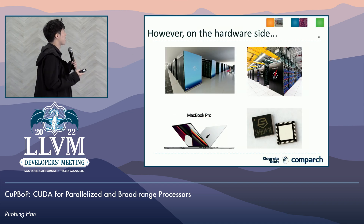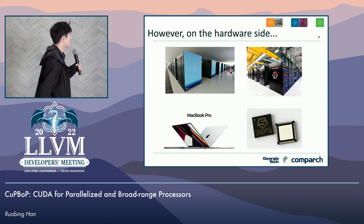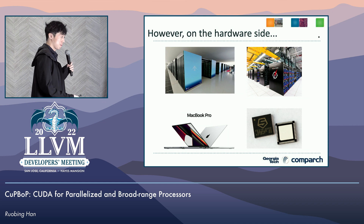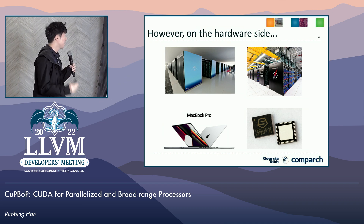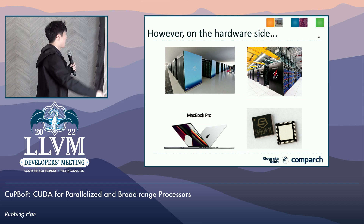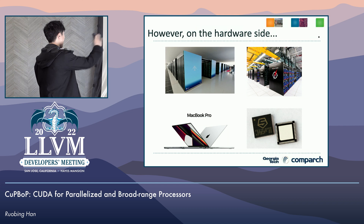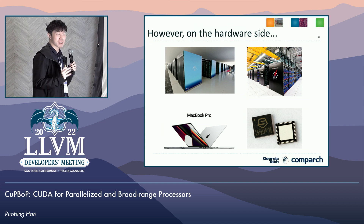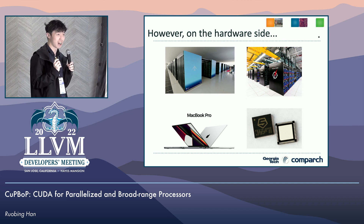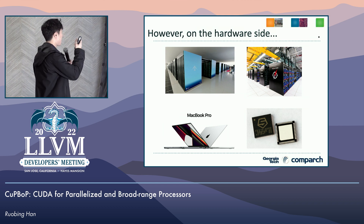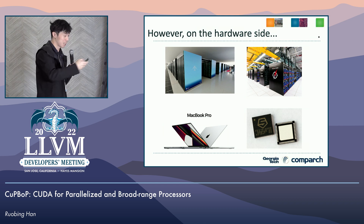However, looking at the hardware side, the most powerful computing systems like Fugaku and Frontier contain no NVIDIA devices, so they cannot execute CUDA. And also for MacBook Pro and customized chips based on RISC-V — all of them have really high performance comparable to NVIDIA devices, but they simply cannot execute CUDA programs.